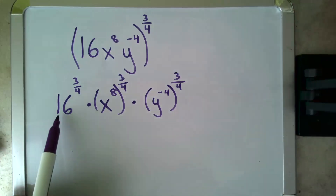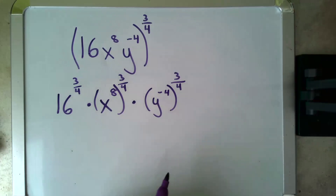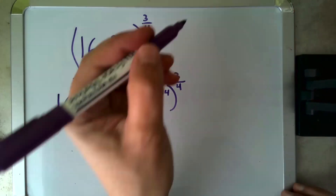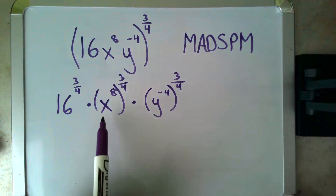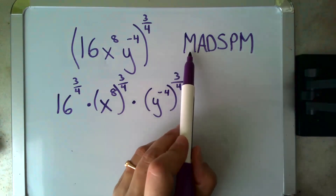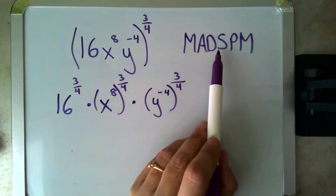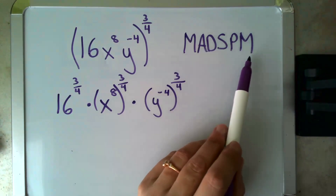I'm going to save my 16 to the three-fourths for last and deal with the other two first. The acronym MAD SPAM — if this is new to you, go check out that video first — means: when my bases are the same, when I am Multiplying, I Add my exponents; when I'm Dividing, I Subtract my exponents; when I'm raising to a Power, I Multiply my exponents.